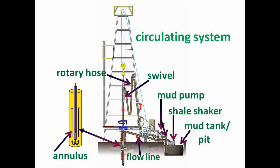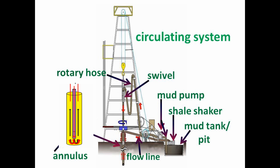The circulation system consists of a circulating fluid, usually referred to as mud, the mud pit, the mud pump, the rotary hose, the swivel, the flowline, the shale shaker, and other filtration devices. Between the drill pipe and the borehole wall, there is a space called the annulus that is also part of the circulation system.